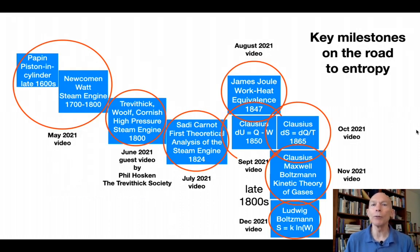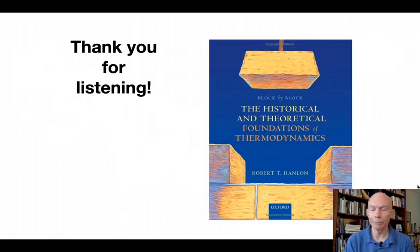This concludes the review of the key milestones on the road to entropy, starting with the steam engine back in the 1700s, leading all the way up to Boltzmann's work in probabilistic theory. Thank you very much for listening to this. Naturally, I'm going to end by saying that I go into a lot more detail on all of these concepts in my book, Block by Block, The Historical and Theoretical Foundations of Thermodynamics. In the year 2022, next year, I'm going to start covering a wide range of different topics in thermodynamics now that I'm done with the road to entropy. I look forward to seeing you then. Thank you again for listening. Take care. Bye-bye.